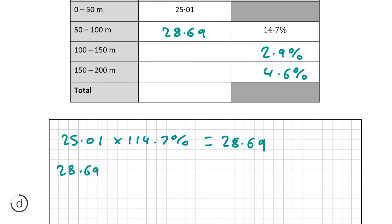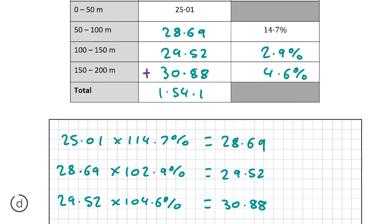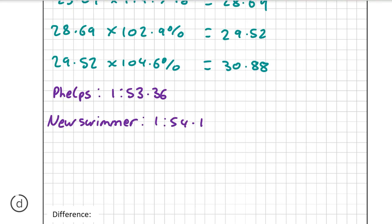We're going to do the exact same thing with the third split, this time multiplying by 104.6%. This gives us an answer of 30.88 seconds, which we fill into our table. Looking back at the table and adding our four split times together, we find that the race took this swimmer 1 minute and 54.1 seconds. Subtracting Phelps' time of 1 minute 53.36 seconds gives us a difference of 0.74 seconds.